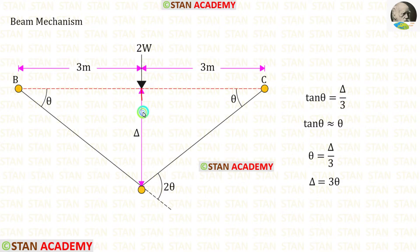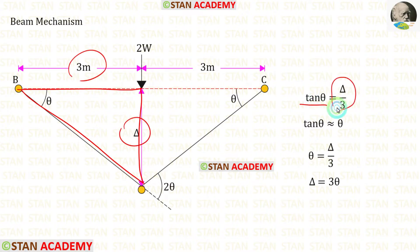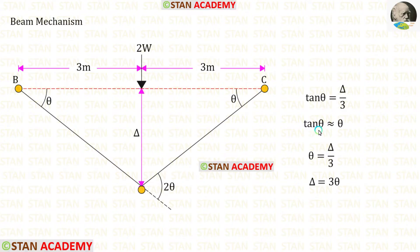Let us keep the displacement under the load as delta. Taking this triangle, tan theta equals delta upon 3. Since the value of tan theta will be very small, tan theta is approximately equal to theta. So we can take theta equal to delta upon 3, which gives us delta equal to 3 theta.